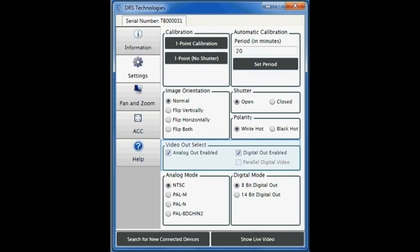For video out select, the default shows the analog out enabled and digital out enabled boxes checked. Parallel out is not available for this configuration of the TamRisk 320. Under analog mode, we can use the radio buttons to select standard NTSC or several PAL modes. And under digital mode, use the radio buttons to select 8-bit digital video out or 14-bit digital video out, depending on your specific requirements.